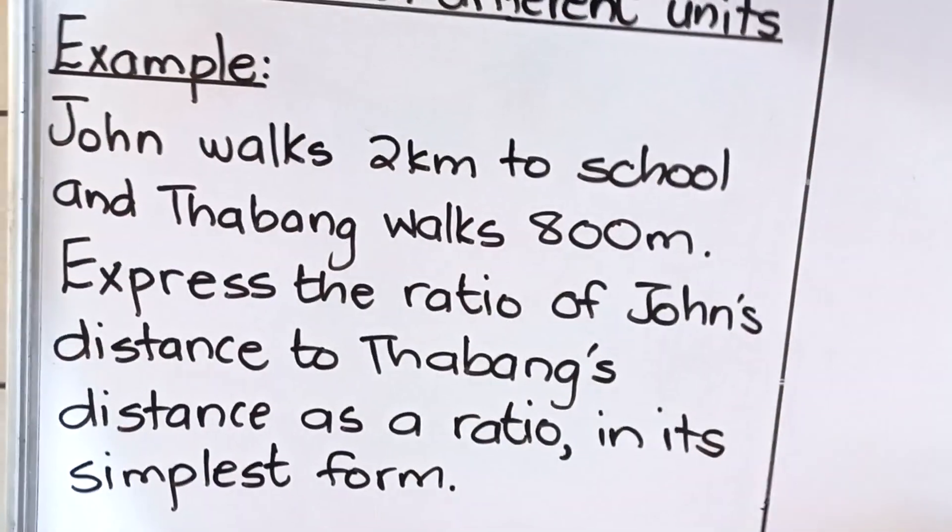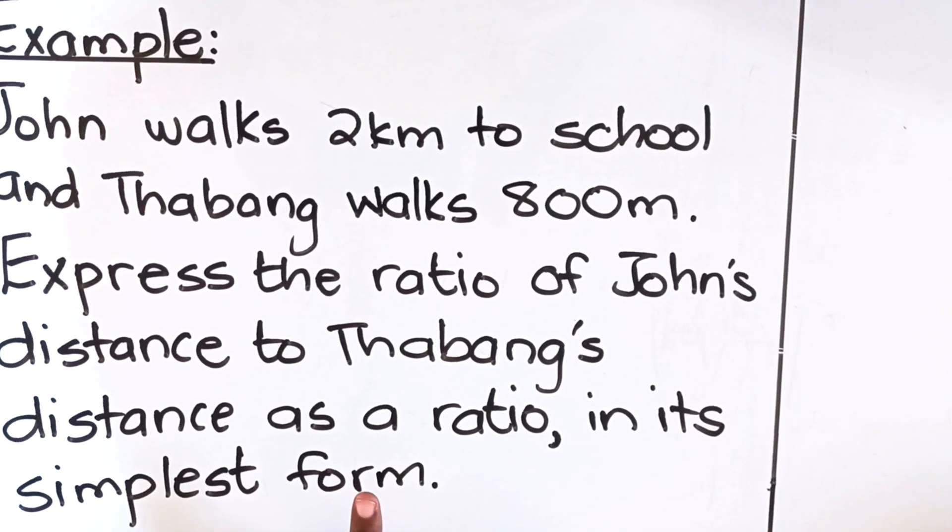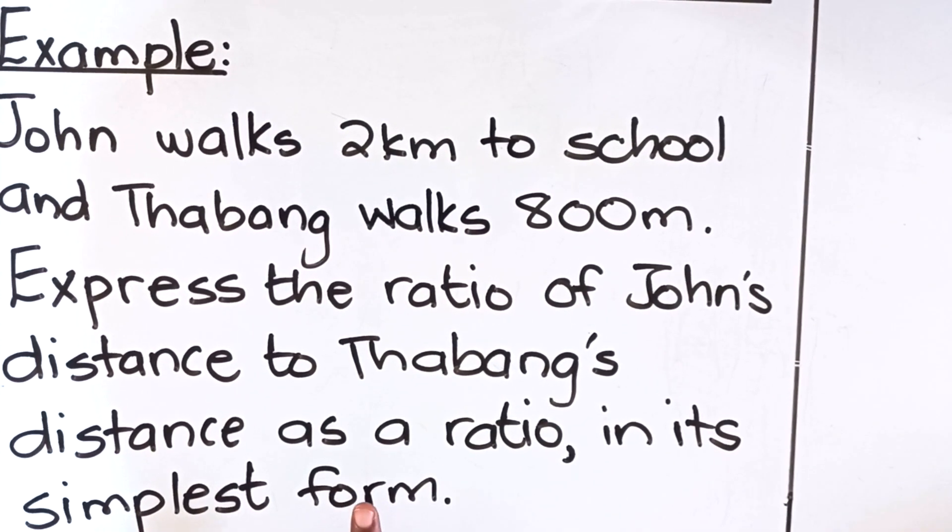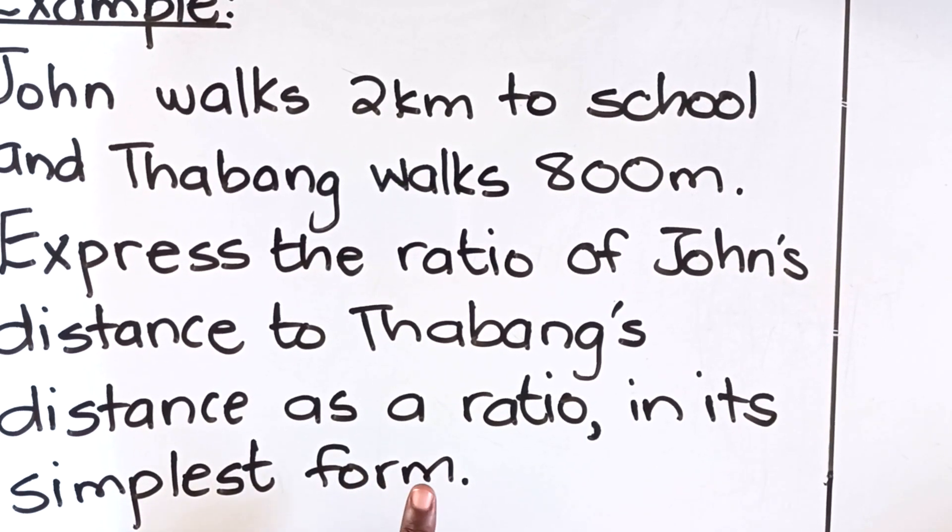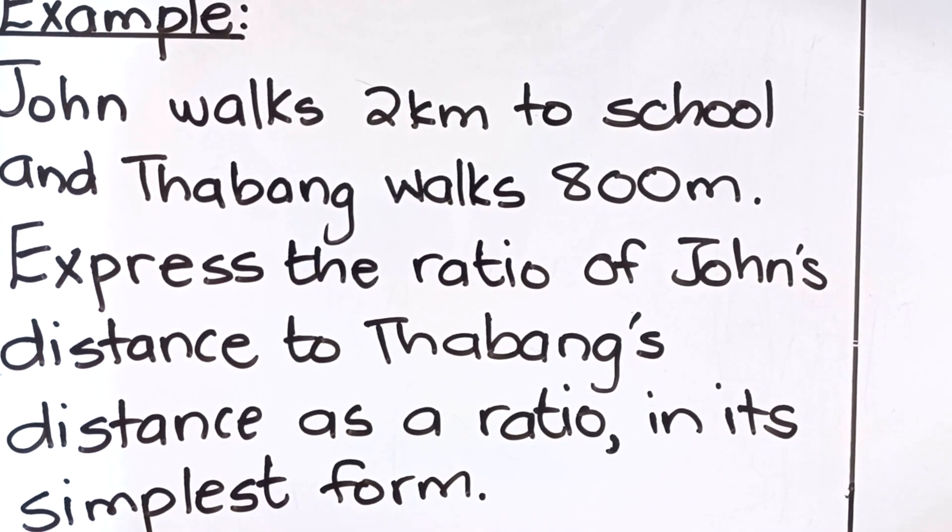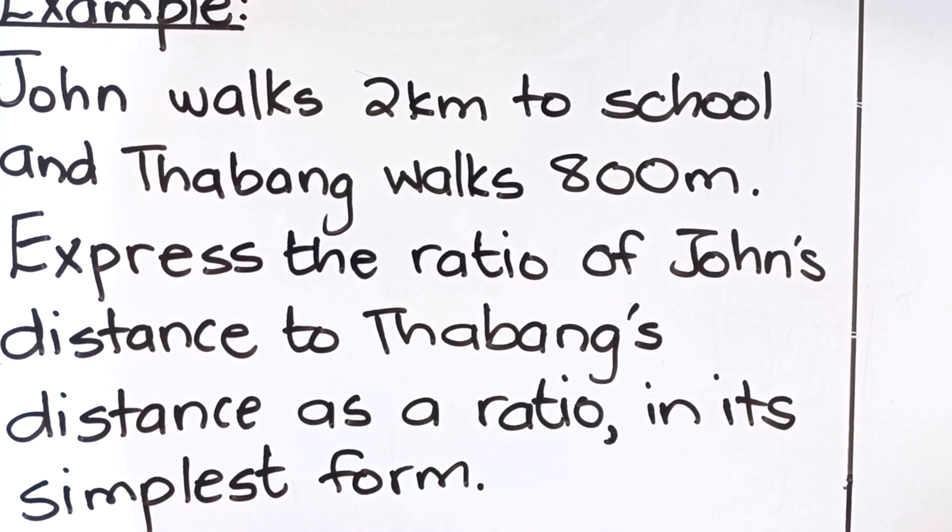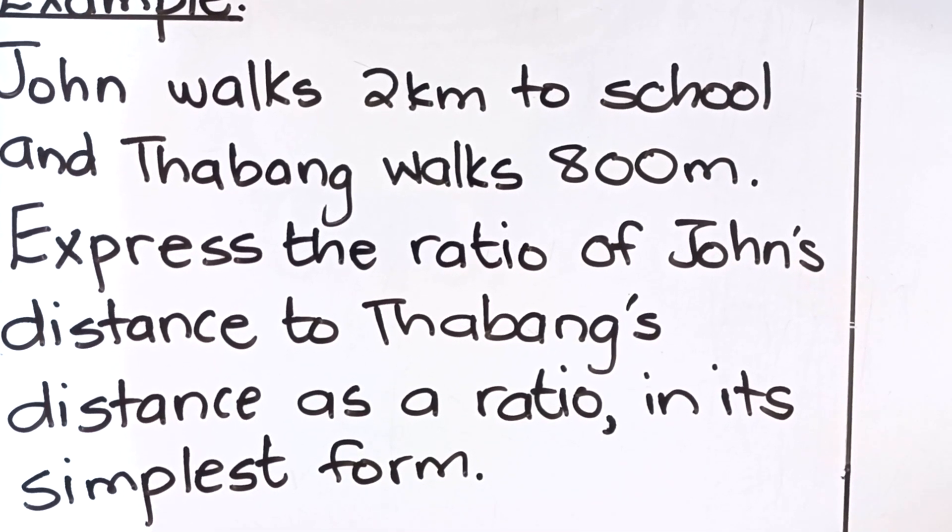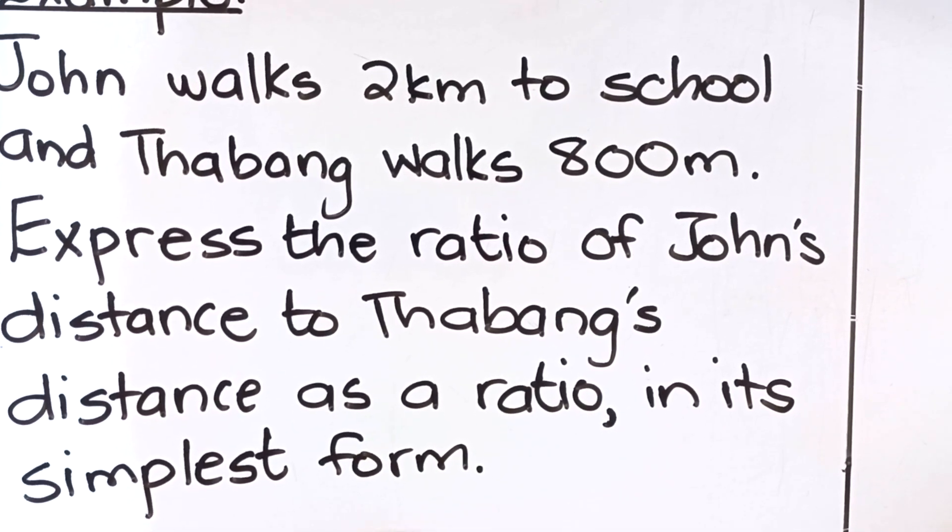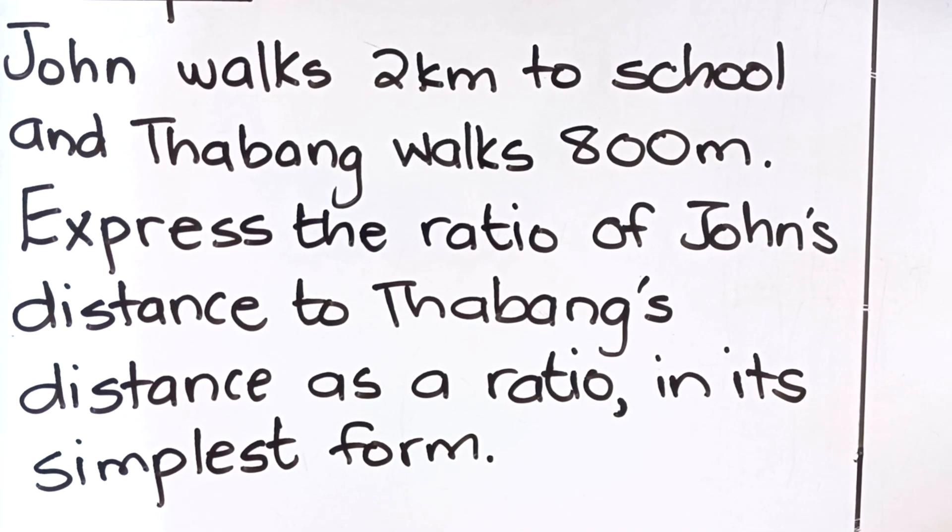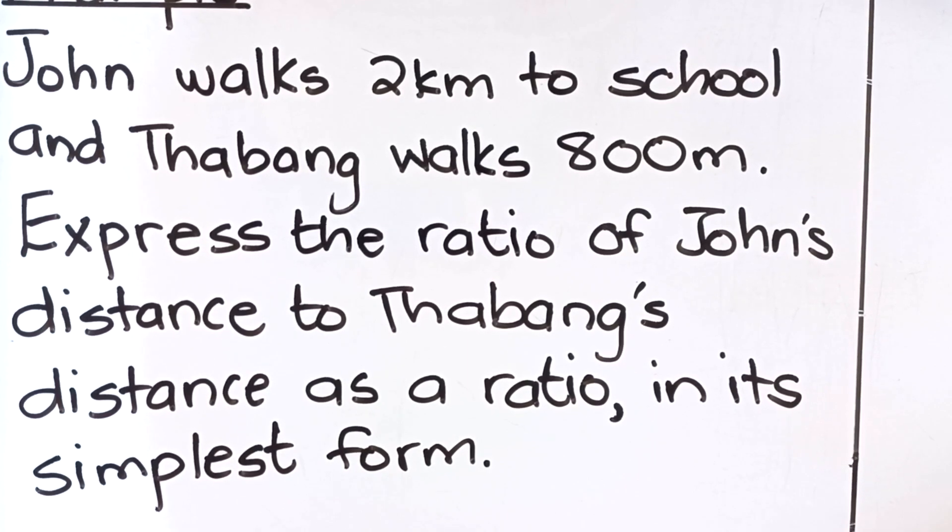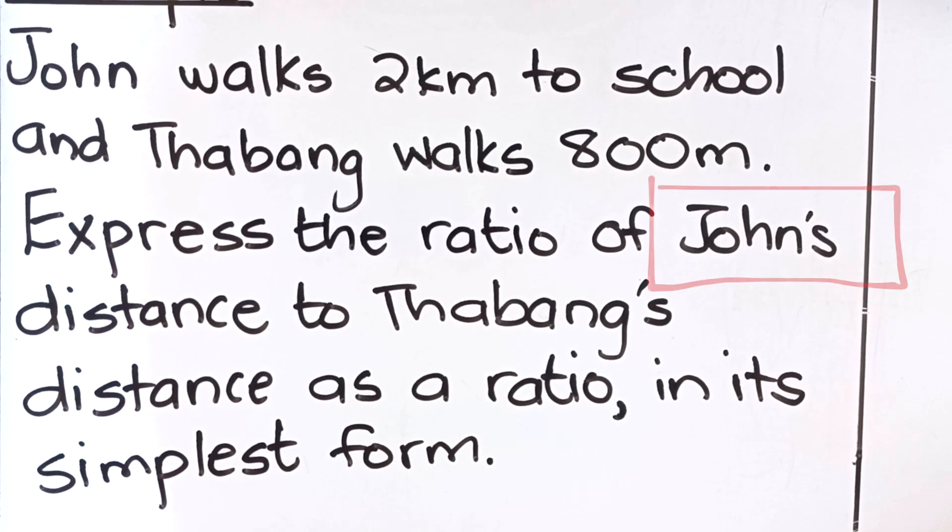Our example says John walks 2 kilometers to school and Tabang walks 800 meters. Express the ratio of John's distance to Tabang's distance as a ratio in its simplest form. So it means you must write it as a ratio and then simplify it.